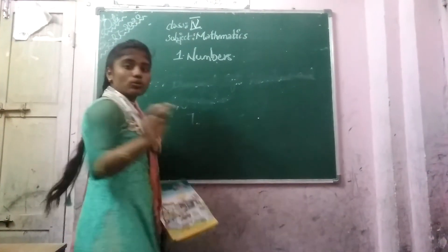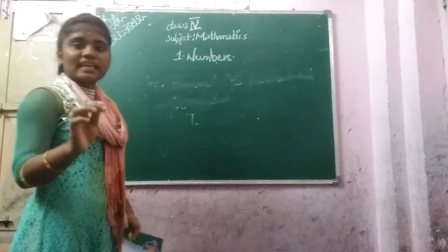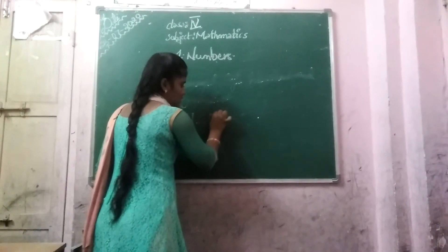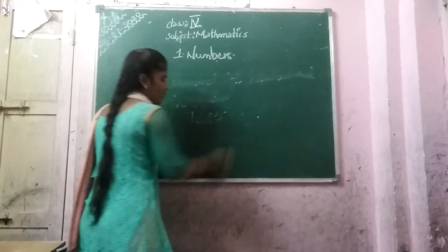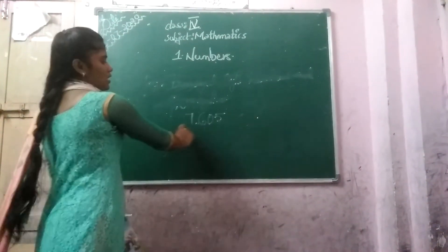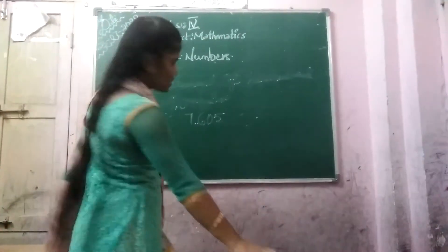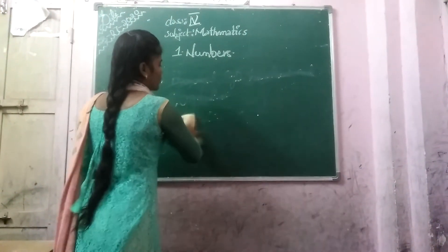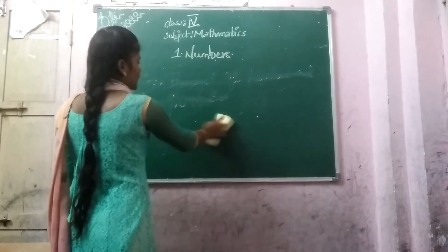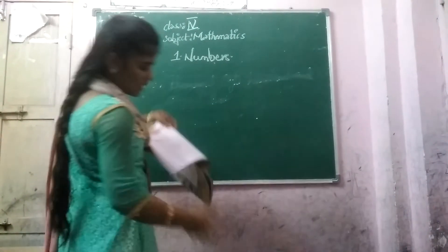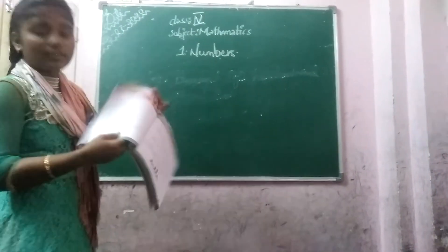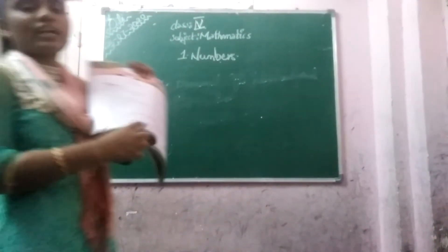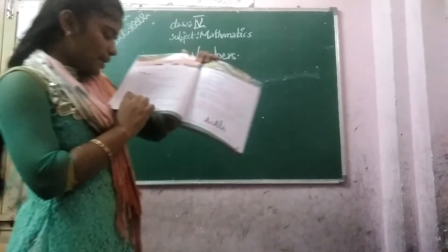There is no number in the tens place, so you should keep 0 in the tens place and write 5. So 7605 — this is called normal form. Here they have been given in expanded form, so you should write in normal form.